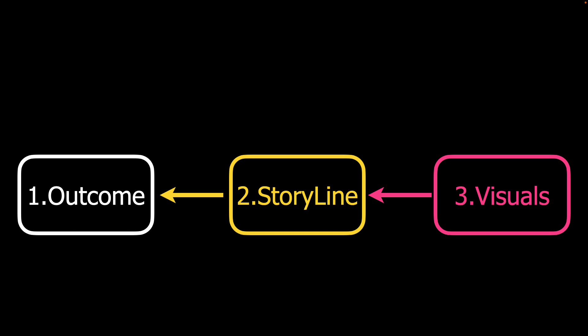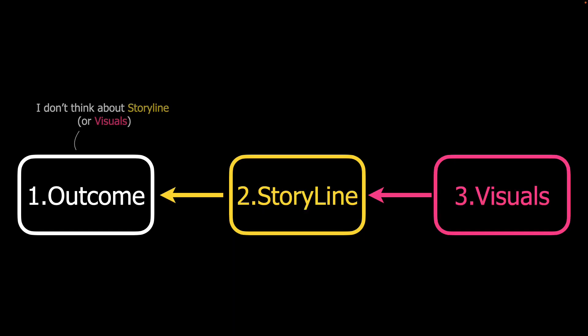Now, here's the most important thing. When I'm doing one, I don't want to think about the others. When I'm thinking about the outcomes, I don't think about the storyline or the visuals. This is important because I don't want my outcomes to be biased by my teaching style. My outcome should be dependent on the broader course objectives, as it should be.